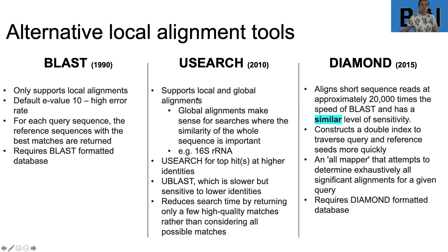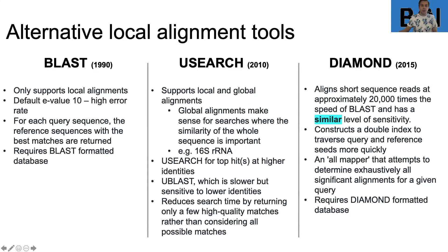USEARCH has multiple tools within it: Usearch for high-identity matches and Ublast, which is slower but sensitive to lower identities. One way USEARCH increases speed is by returning fewer high-quality matches — it is not an all-mapper like BLAST and Diamond. It finds high-quality matches and returns them, but once those are found, it stops looking through the rest of the database.